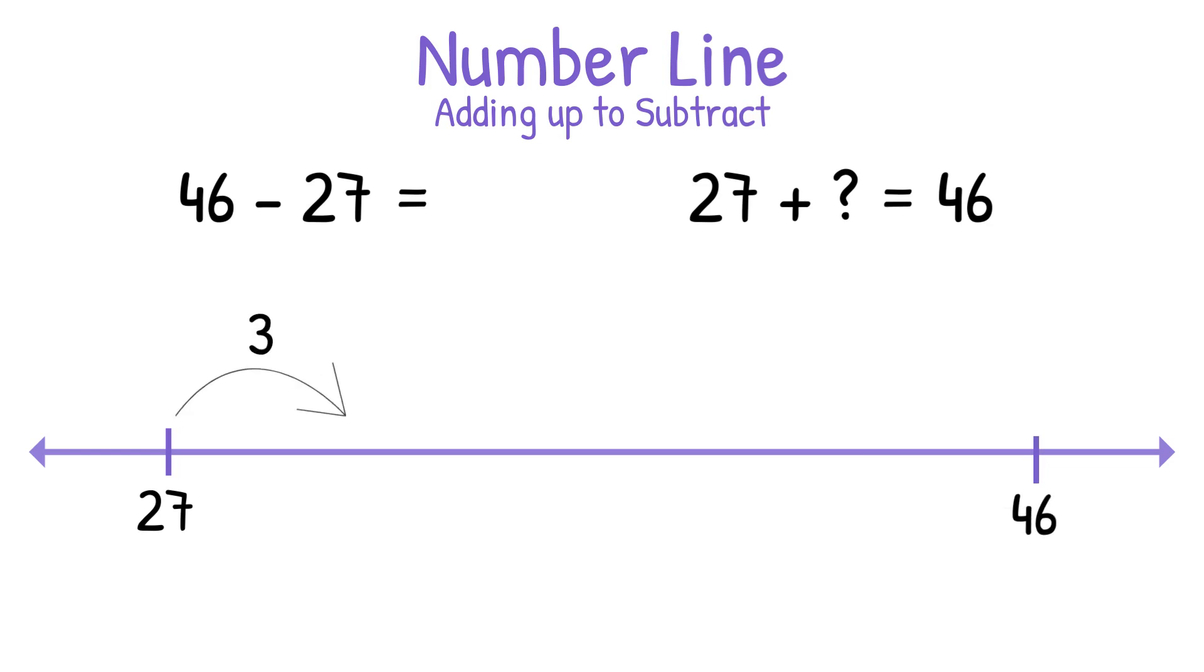So we're going to add 3 to get to a nice clean 10. 27 plus 3 equals 30. Next, we'll add 10 to bring us to 40. And then we will add 6 more to bring us to 46. The way you find out your missing addend is you add the total of the jumps. So 3 plus 10 plus 6 equals 19. Again, we get that same answer, 19, using four different strategies.